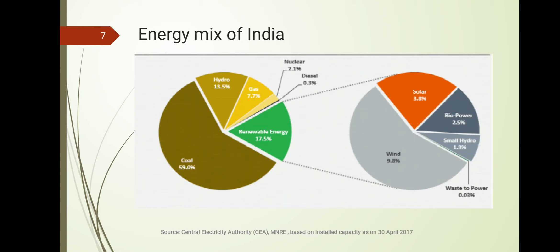Breaking down the 17.5% renewable share further: wind contributes 9.8%, solar 3.8%, small hydro power plants 1.3%, and biopower is very very small at only 0.03%. Energy from biomass accounts for about 2.5% within that 17.5% renewable share. This is currently very low, but it can be improved through better understanding of bioenergy technologies.